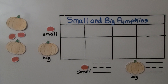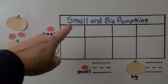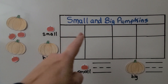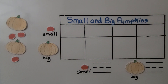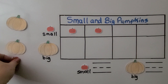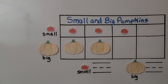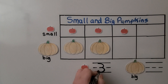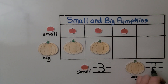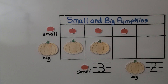We can sort and classify objects by size into two categories of small and big. This graph says small and big pumpkins. We're going to put the small ones in this row and the big ones in this row. We can take these small pumpkins and put them here, one in each square, and we can take the big ones and put one in each square for the big row. We can count the small ones: one, two, three — and write the number three. We can count the big ones: one, two — and write the number two. We don't count the labels; we only count what are in the boxes. There are three small pumpkins and two big pumpkins.